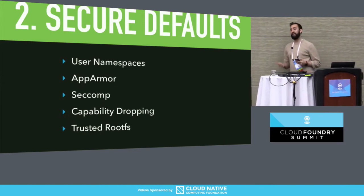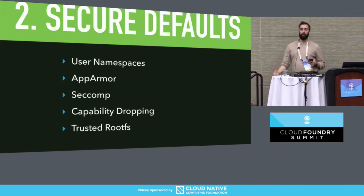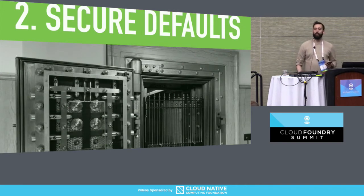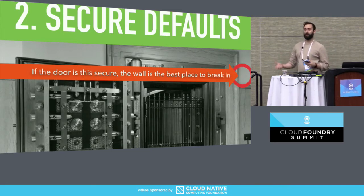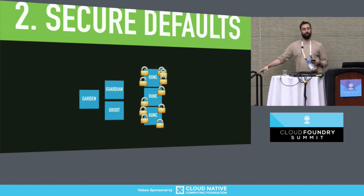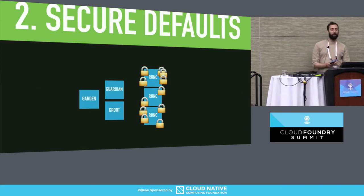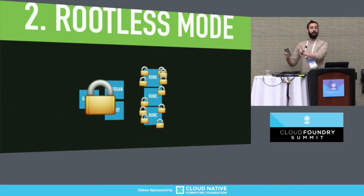I want to talk about security defaults and rootless mode. Out of the box, Garden turns all the security levers it can on for your containers. But there's a bit of a problem. When you see a door that's really secure, you start thinking about the wall. When we've really secured the door, the wall starts to look attractive. We've secured the crap out of the containers, but our actual Garden server is starting to look a bit risky, because to do all this stuff we have to run as root.